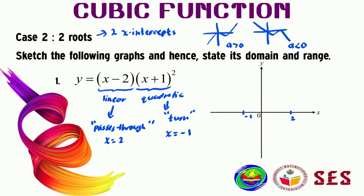When we expand this function, the coefficient of x³ is positive, so we will have the positive shape of the graph. We need to make sure the graph turns at x = −1. So starting from this point, it turns at negative one, then passes through x = 2 and goes up. Let's sketch the graph now — it turns at negative one and then passes through two.